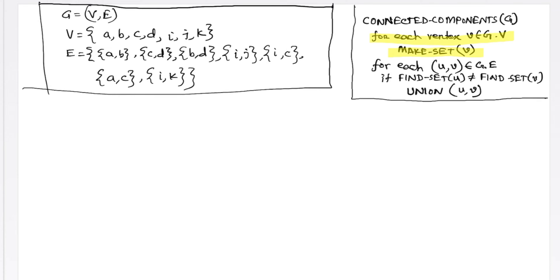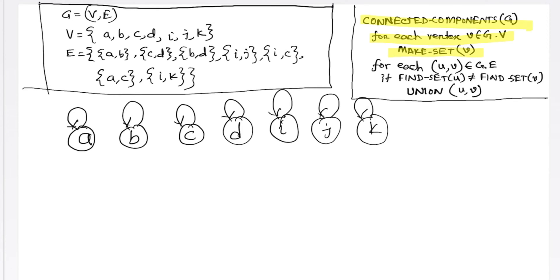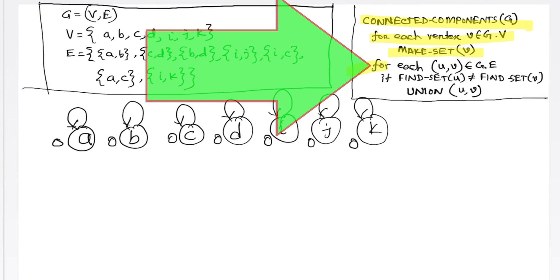Therefore, after this first for loop is executed, we will have seven rooted trees. Recall from the previous video on disjoint set forest that each of these rooted trees will have a zero rank in the very beginning. Now after all these rooted trees are created, our execution will go to this particular for loop where we are iterating over each of the edges.